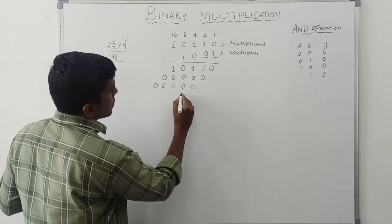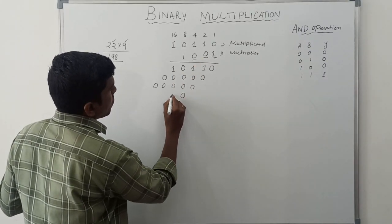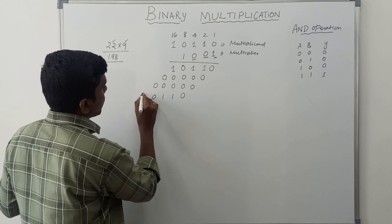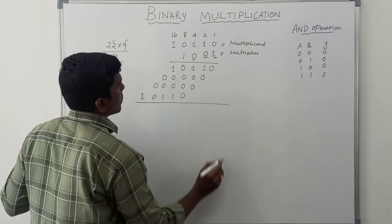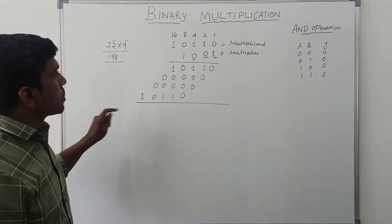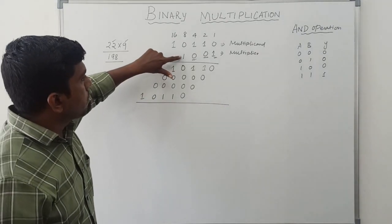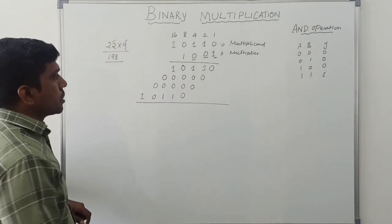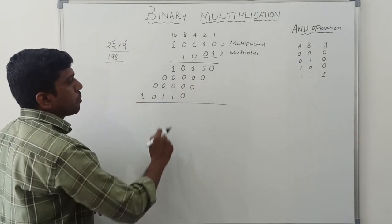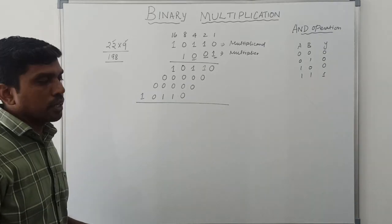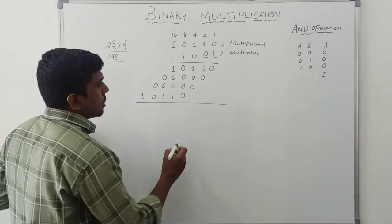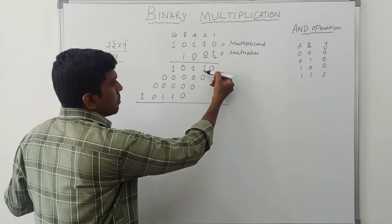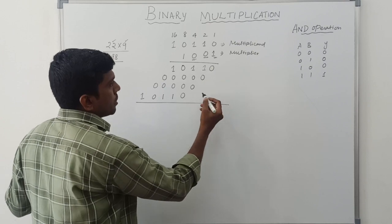The final multiplier bit is 1. So 1 multiplied with the multiplicand gives: 1·0=0, 1·1=1, 1·1=1, 1·0=0, 1·1=1. All the multiplier bits have now been multiplied with the multiplicand term. These are all called the partial product terms. After getting the partial product terms, just sum all the columns.